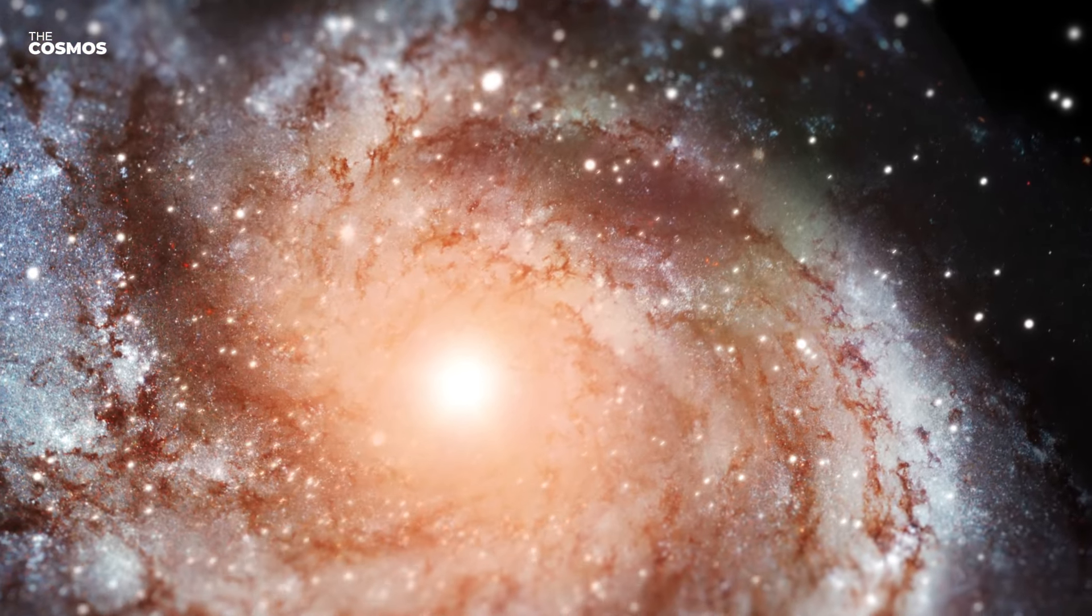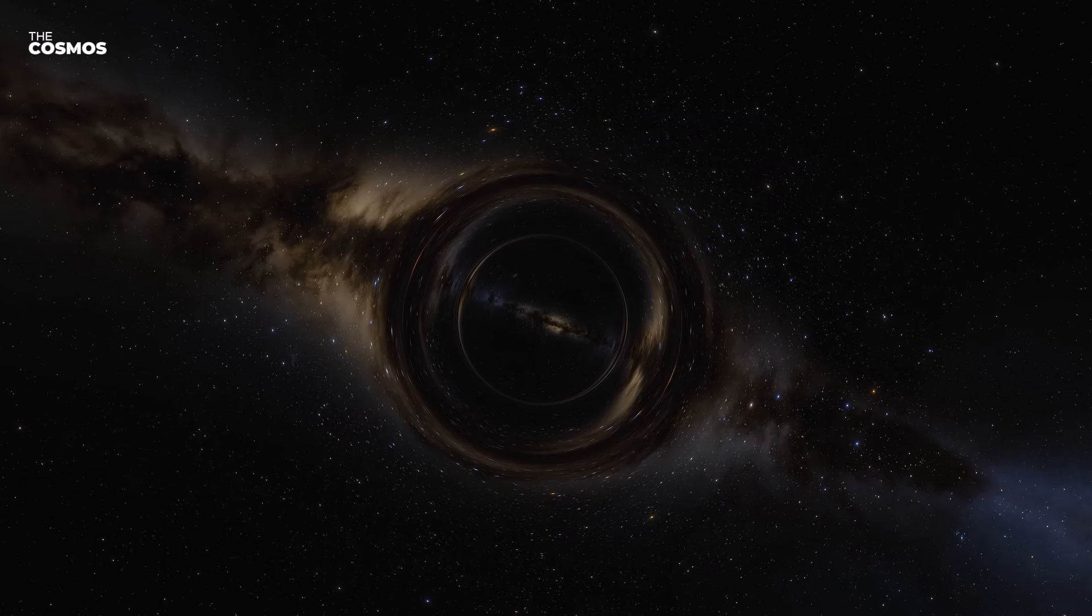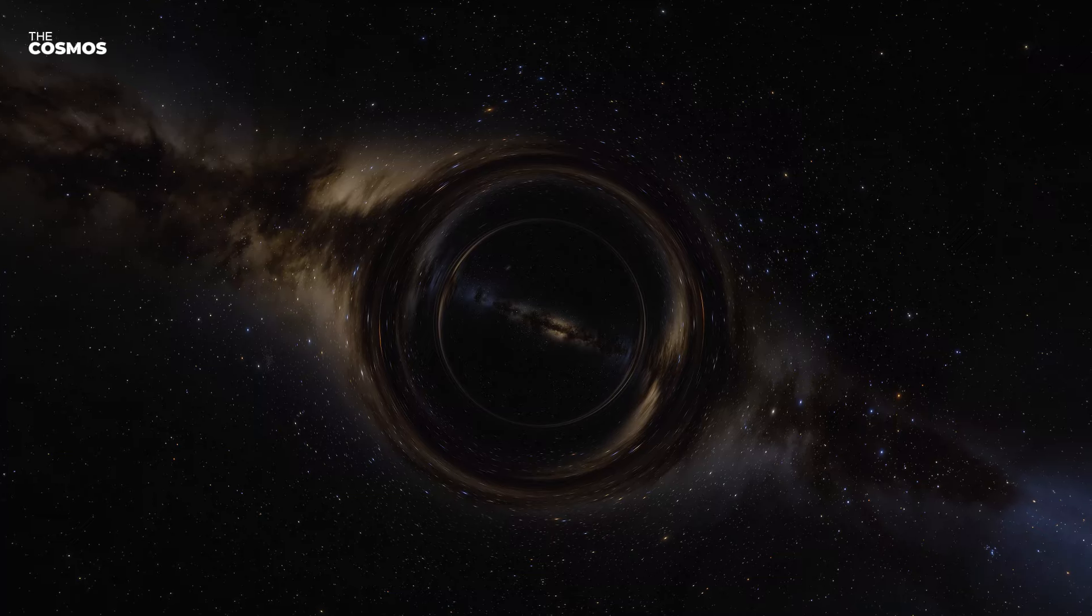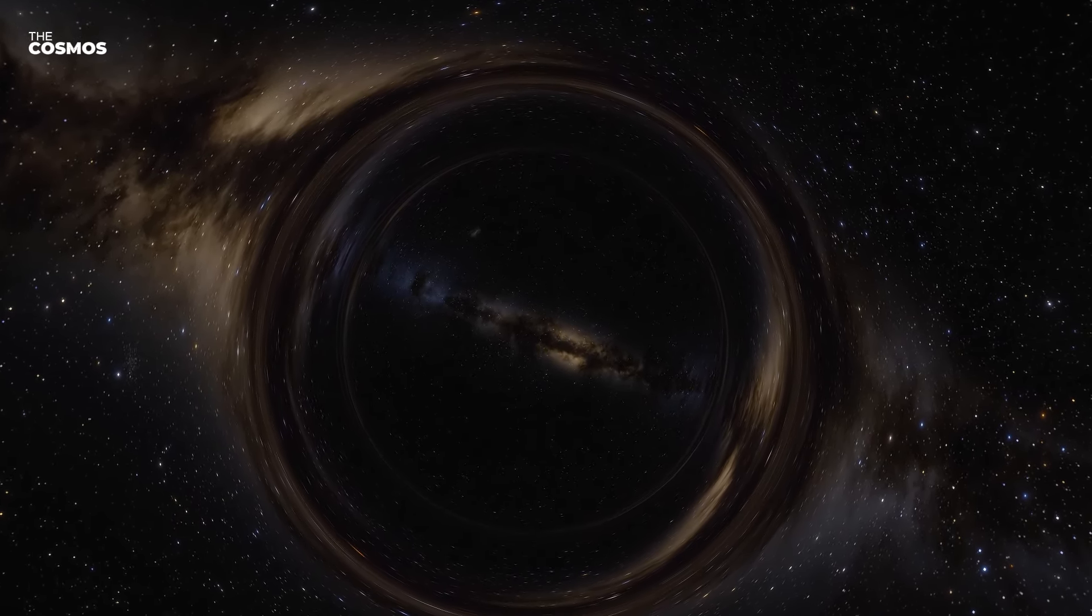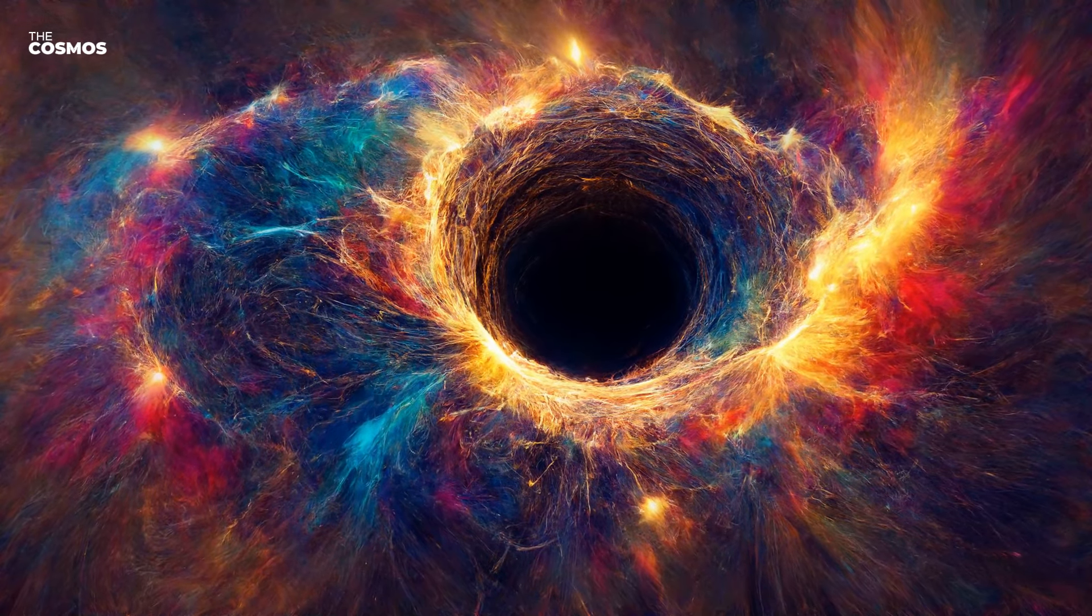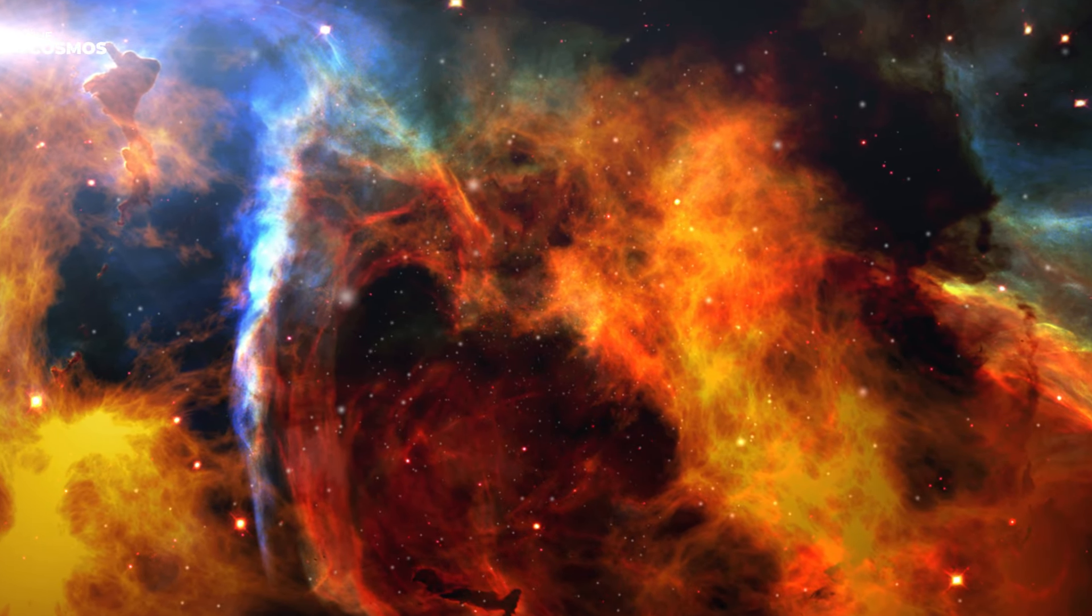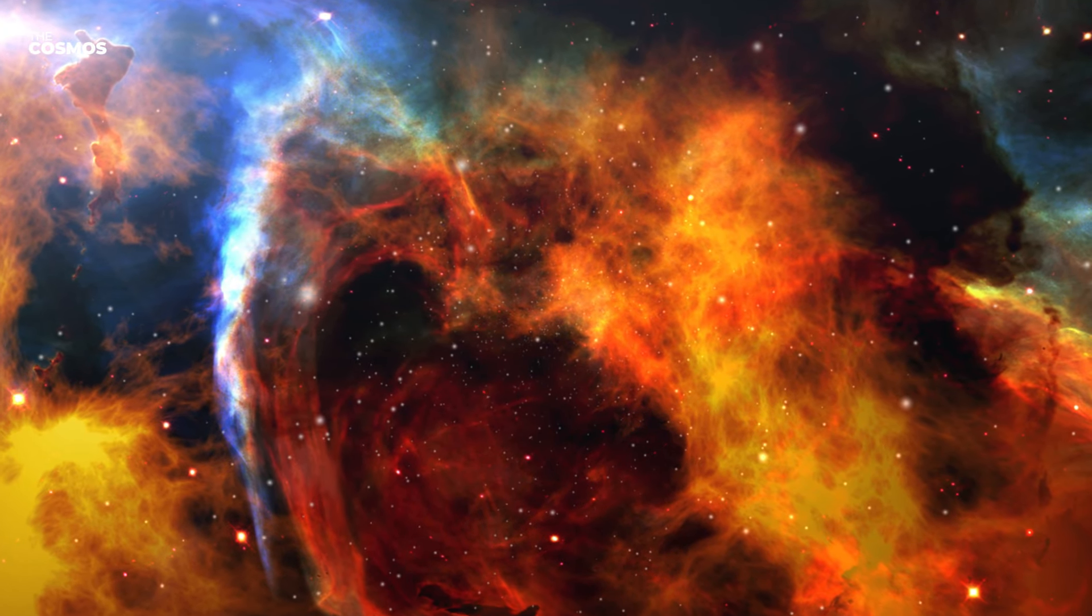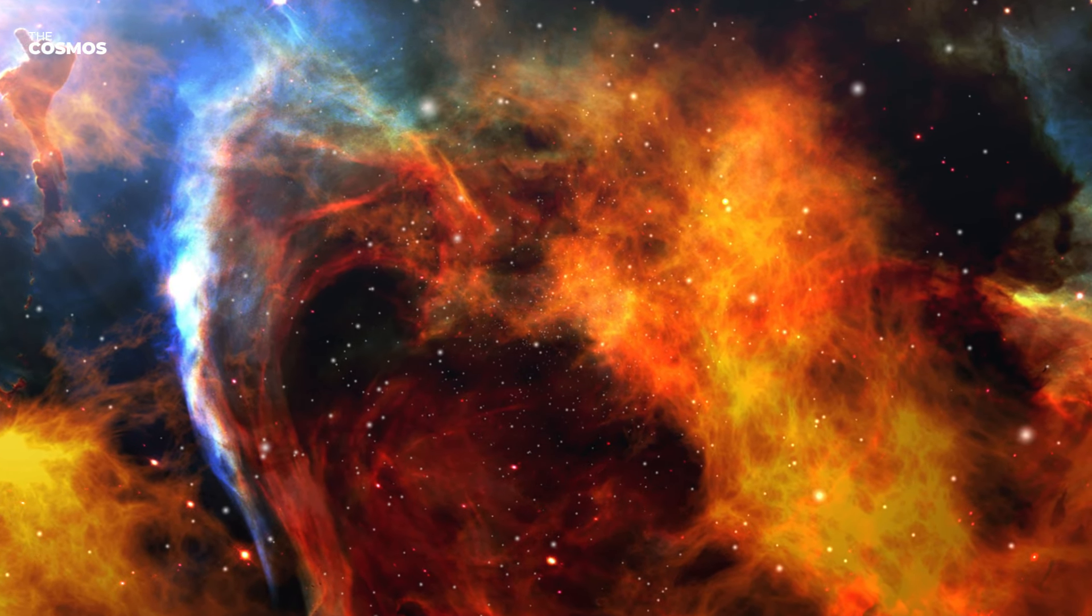As dark energy diminishes, the galaxies that were once moving away from each other start to slow down and reverse direction. They begin to move closer, gradually at first, but with increasing speed. This movement results in galaxies colliding and merging. But these are not violent crashes. Since galaxies are mostly empty space, they blend into each other like merging clouds, forming larger and denser structures in the process.